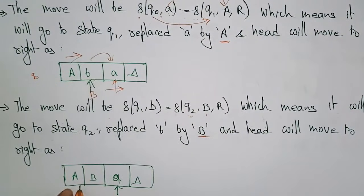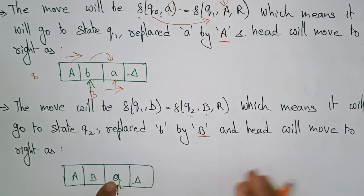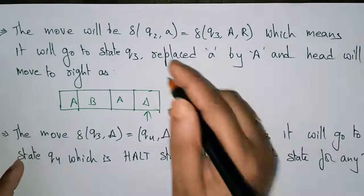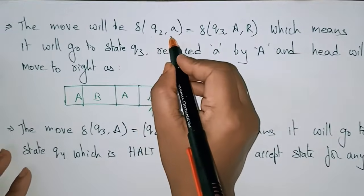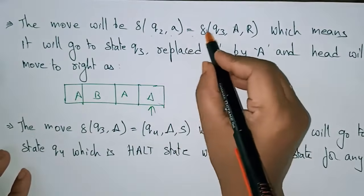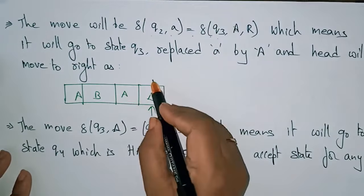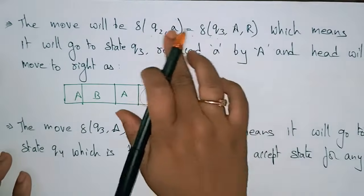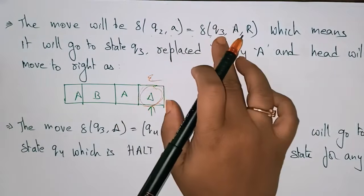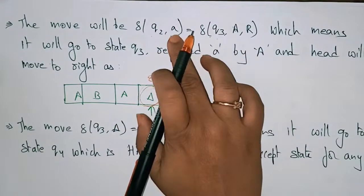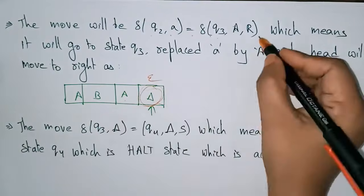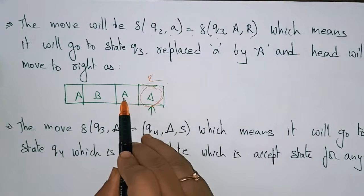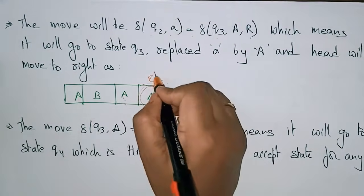Now the head points to A, and I write the transition function. The current state is Q2 and the input symbol is A. So delta(Q2, A): the state changes to Q3, small A is replaced with capital A, and the head moves towards the right. So it goes to state Q3, replaces small A with capital A, and the head moves right.